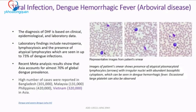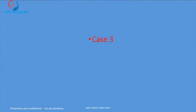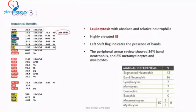This was confirmed as dengue hemorrhagic fever. Case three: the WBC count was 21,900 with a left shift flag and an IG of 8.69%. Leukocytosis with a high IG count was evident, along with thrombocytosis. However, hemoglobin was low with normocytic normochromic anemia.